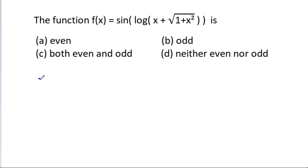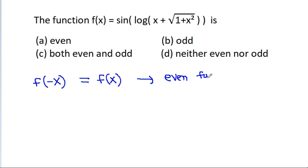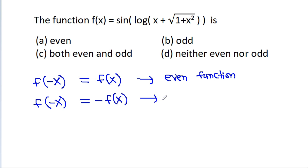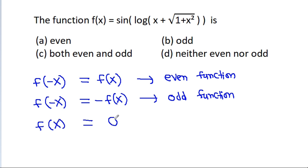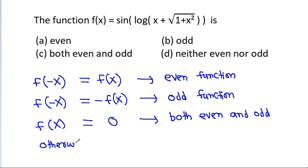So, if f(-x) is equal to f(x), then it is an even function. If f(-x) is equal to minus f(x), then it is an odd function. And if f(x) is equal to 0, then it is both even and odd. Otherwise, it is neither even nor odd.